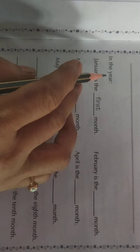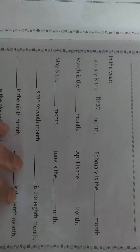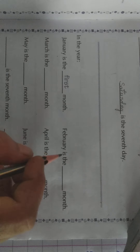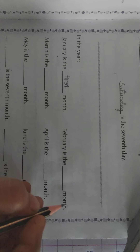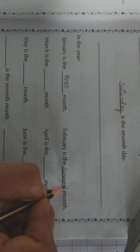Now look at this exercise. One exercise is given — in the year, one after another, how do the months go? January is the dash month — January is the first month of the year. Here one has been done for you already. February is the dash month of the year — February is which month? Second month, S-E-C-O-N-D, second.